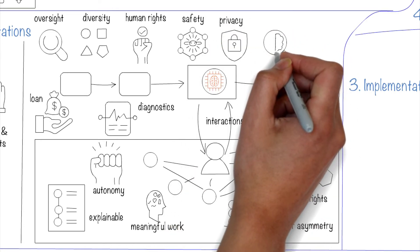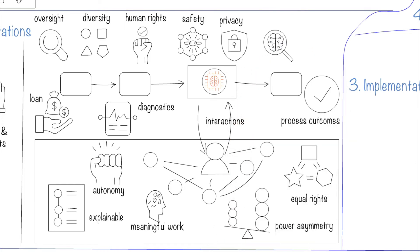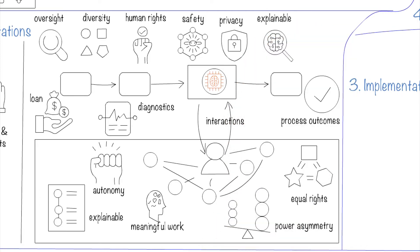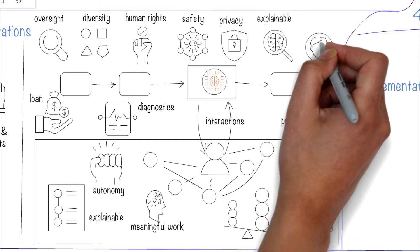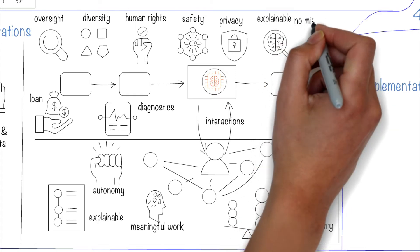On the legal side, we want the system to be transparent and explainable, and auditable for its actions so any errors can be explained or corrected. Its behavior should be independently auditable. The system should not misrepresent itself as a human, and humans need to know if they are talking to a system.